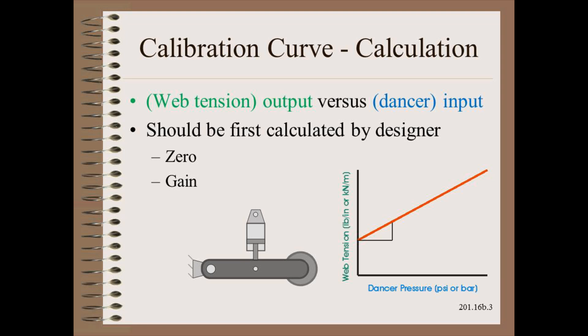the designer should calculate the zero and gain based on roller, arm and cylinder geometries. This is easier than the counterpart of calculating load cell outputs and is in either case needed for proper system sizing.